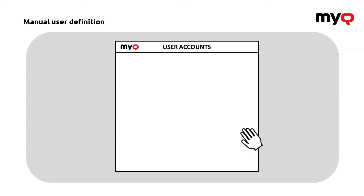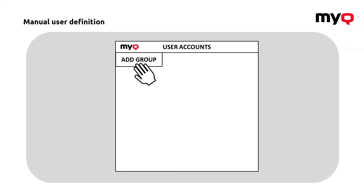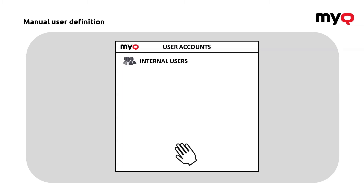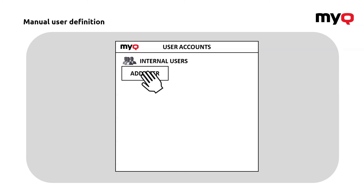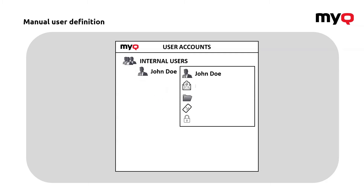You will just go there and add a new user by clicking on a button. You can also create a group. When it comes to groups, this might be really important because groups are the default cost centers MyQ is using, so I definitely recommend you to create groups. Then just create the user and provide all the options the user should be able to use, like his email, scan, storage, card, or pin he will be using to authenticate on the machine.